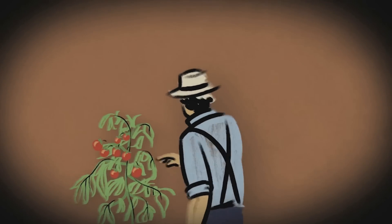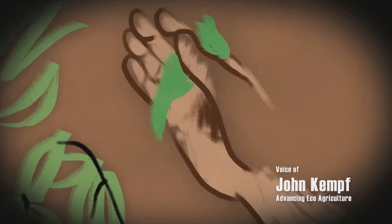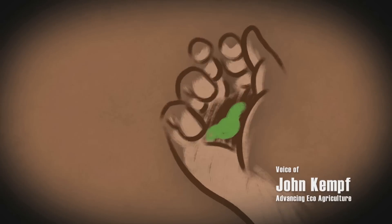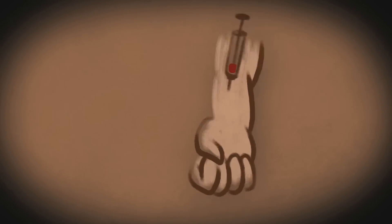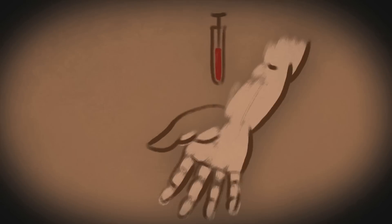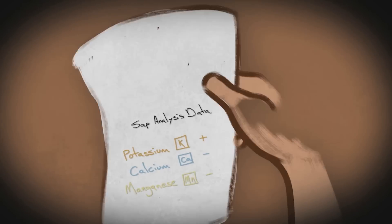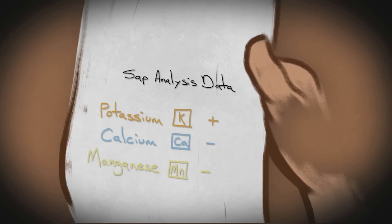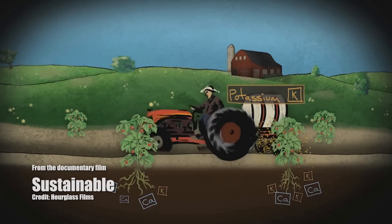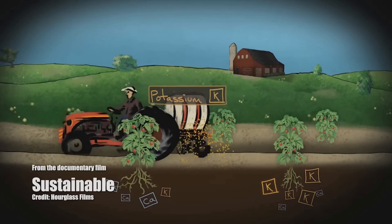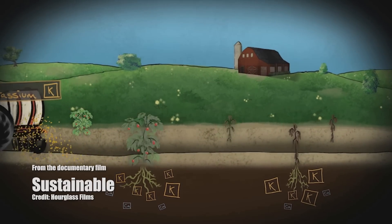Starting in 2013, we began doing a lot of trialing with plant sap analysis, which is the equivalent of a blood analysis for people. When we look at the sap analysis data, we are able to see precisely which nutrients are deficient, which nutrients are in excess, and often we find that it is actually the excesses that are creating the deficiencies.